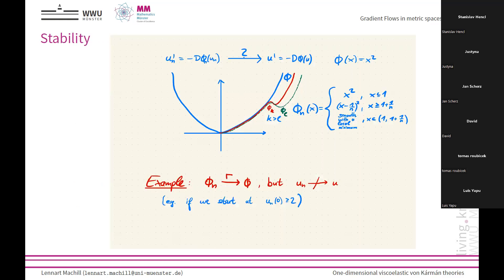We come back to the metric gradient flow structure. We want to know whether solutions of the gradient flow converge to a curve that is a gradient flow with respect to the limiting energy. We start with the gamma convergence result and ask whether gradient flows also converge — and this is not true in general. This is shown by an example where the limit function is approximated by functions having a small local minimum.